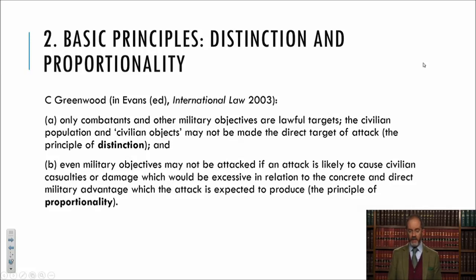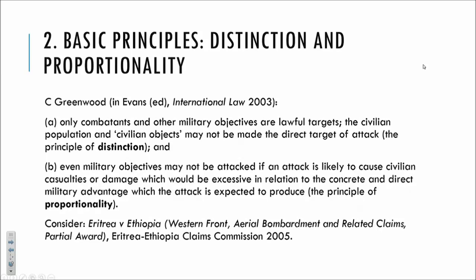But the anticipated amount of civilian damage should not exceed the concrete and direct military advantage obtained. This principle of proportionality is a difficult one because it involves measuring two fundamentally different things — civilian damage and military advantage — and there's no rule that tells us how many civilian deaths is worth shortening the conflict by a given duration. The complexity is illustrated by rulings of the Eritrea-Ethiopia Claims Commission, an arbitral tribunal dealing with claims arising out of their long conflict.